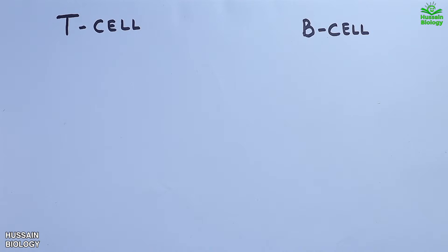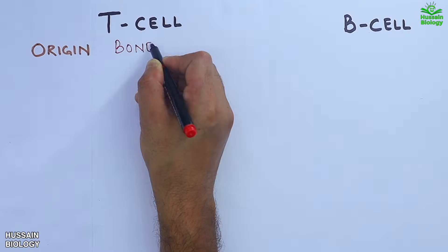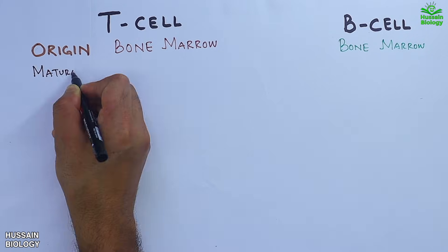In this video we are going to talk about the key differences between T-cells and B-cells, two vital components of our adaptive immune system. First of all, let's begin with the origin of these cells. Both T-cells and B-cells originate from the bone marrow, so in terms of origin they are the same.